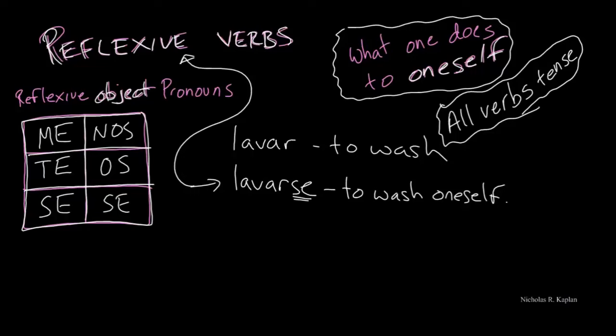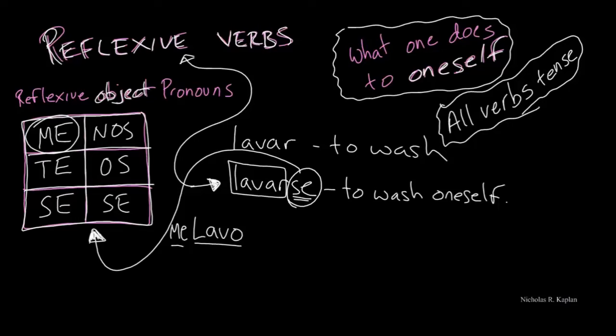Let's use our example here with lavarse. If I want to say 'I wash my hands,' let's start with this portion. To say 'I wash,' we would say lavo. Then we have to deal with the reflexive portion. We come over here and look at our reflexive object pronouns: me, te, se, nos, os, se. Which one is in the I box? That's going to be me. We will place that before the conjugated verb. So me lavo, and then my hands.